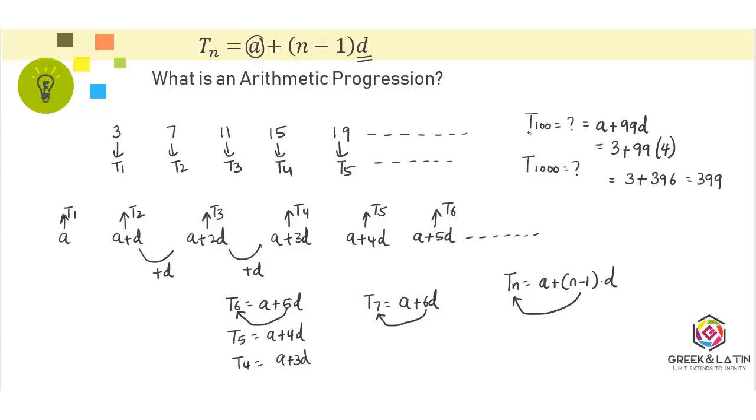I think now you're fairly comfortable with what an arithmetic progression is and how to figure out the nth term. Now let's understand the sum of first n terms of an arithmetic progression by using Gauss's logic.